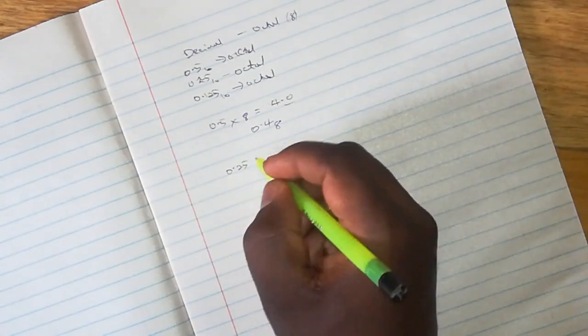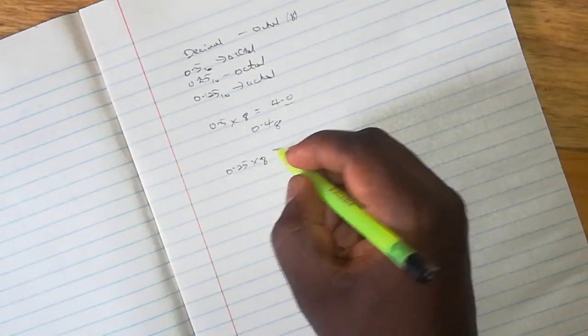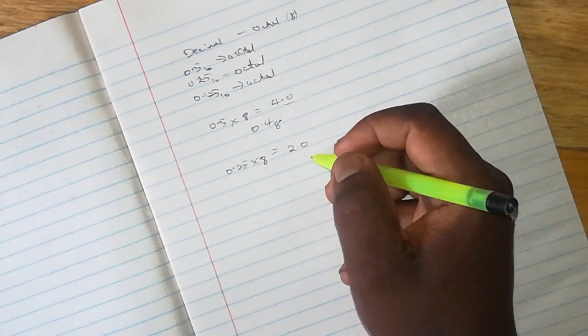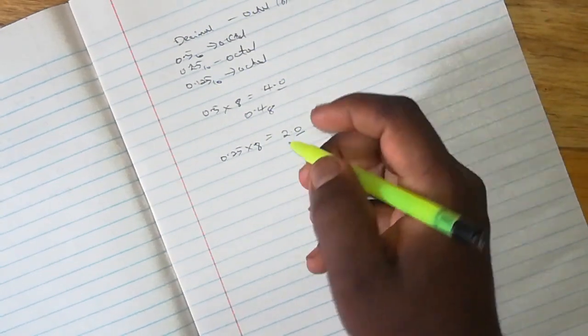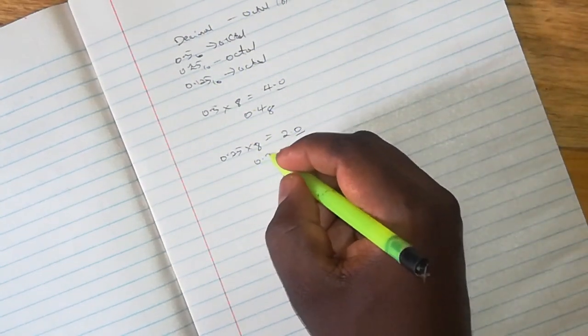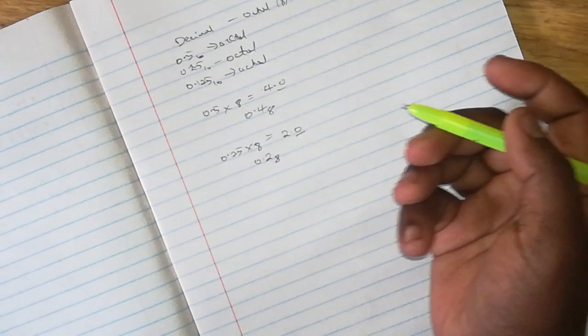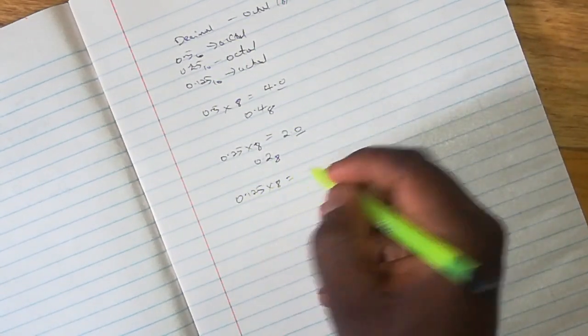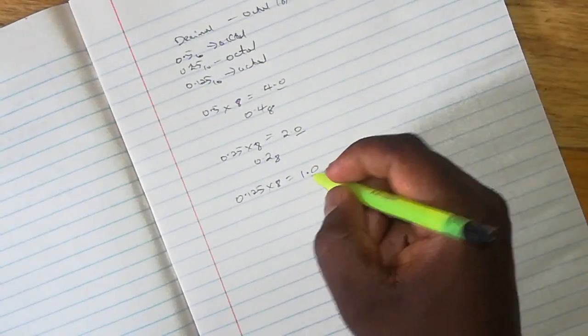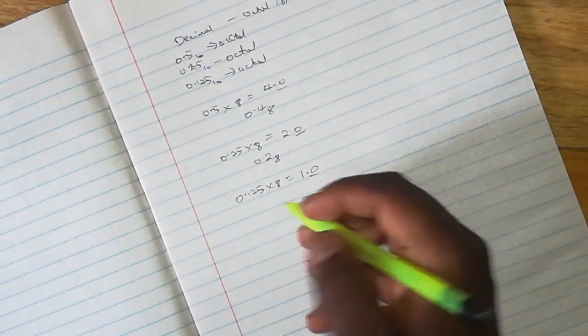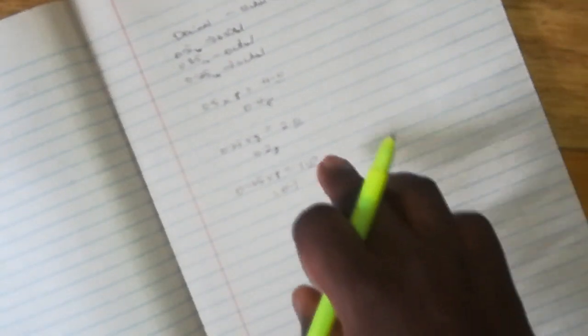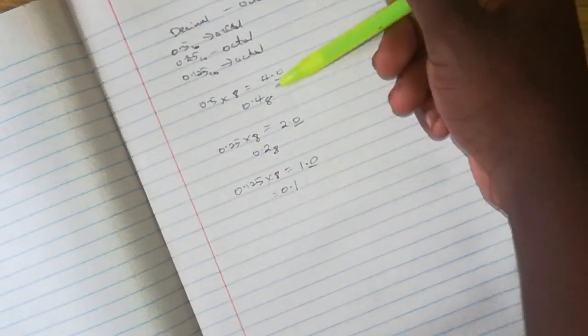0.125 by 8 gives you 1.0. The fraction is already 0, so the answer is 0.1 base 8. Remember, we are reading the whole number of our products in forward order.